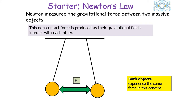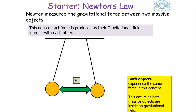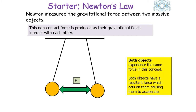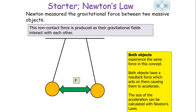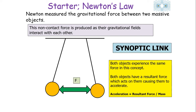Newton measured the gravitational force between two massive objects. This non-contact force is produced as their gravitational fields interact, and both objects experience the same force. Both massive objects have a resultant force which causes them to accelerate, but the size of the acceleration can be calculated from Newton's laws of motion — acceleration equals resultant force over mass — so whilst they may have the same force, different masses produce different accelerations.